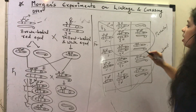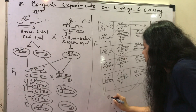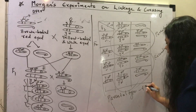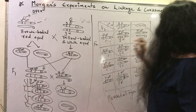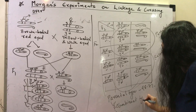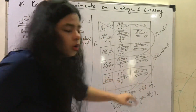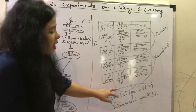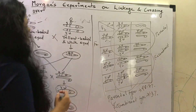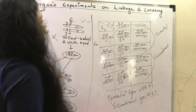The percentage of parental type in the progenies of the F2 generation is 98.7%, and the percentage of recombinant type is very less — only 1.3%. The parental type percentage is more because the genes lie close to each other, so they are inherited together in the next generation. Therefore, the parental type percentage is high and the recombinant type percentage is low.